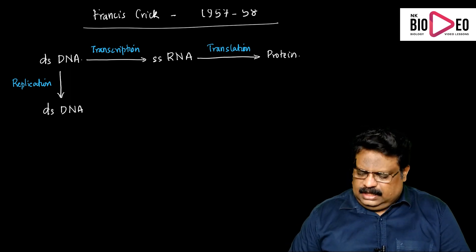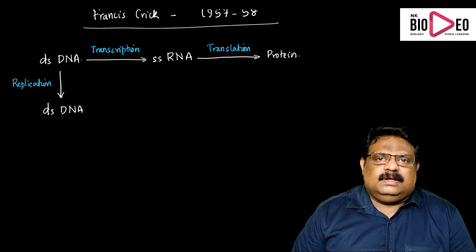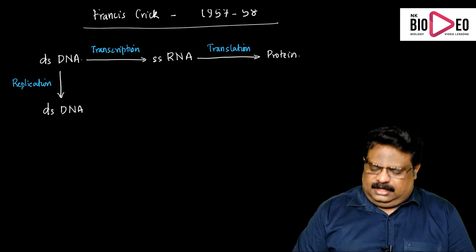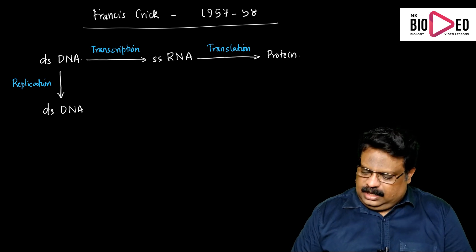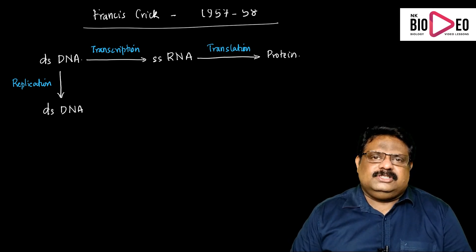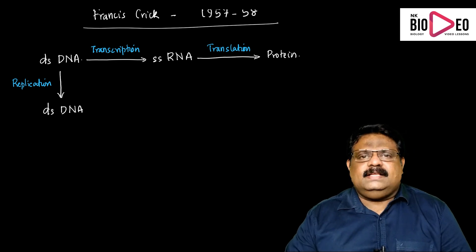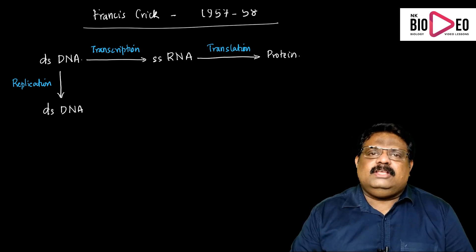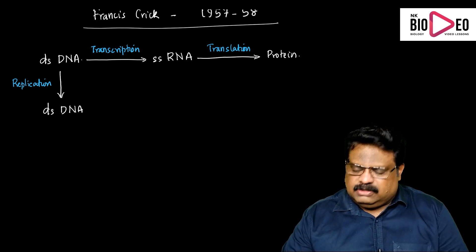Why is this called translation? In the case of DNA or RNA, the messages are written in nucleotide language — nucleotides are the building blocks of nucleic acids. Whether it is deoxyribonucleic acid (DNA) or ribonucleic acid (RNA), the informational system is recorded using a nucleotide sequence. But in the case of protein, the molecule is constructed by the assemblage of amino acids, so the language is called amino acid language. Since the message written in one language is converted into a message written in another language, the process is called translation.